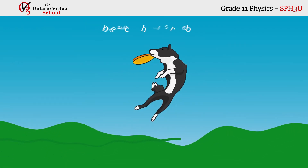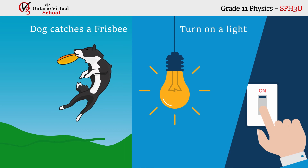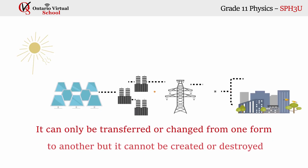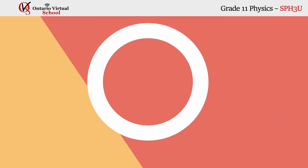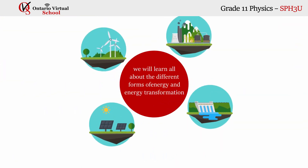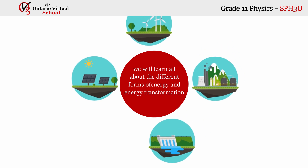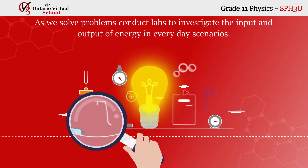Unit three: energy and society. Energy happens as the sun comes up in the morning, when your dog catches a frisbee, or when you turn on a light. Simply put, energy is the ability to do work. It can only be transferred or changed from one form to another, but it cannot be created or destroyed.